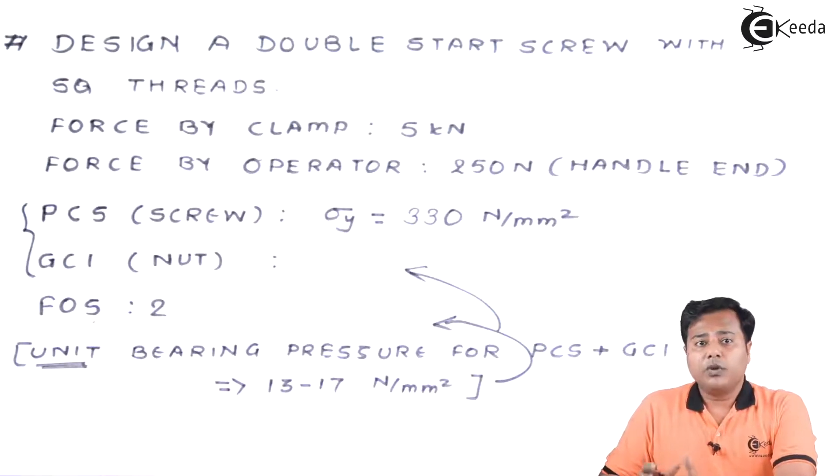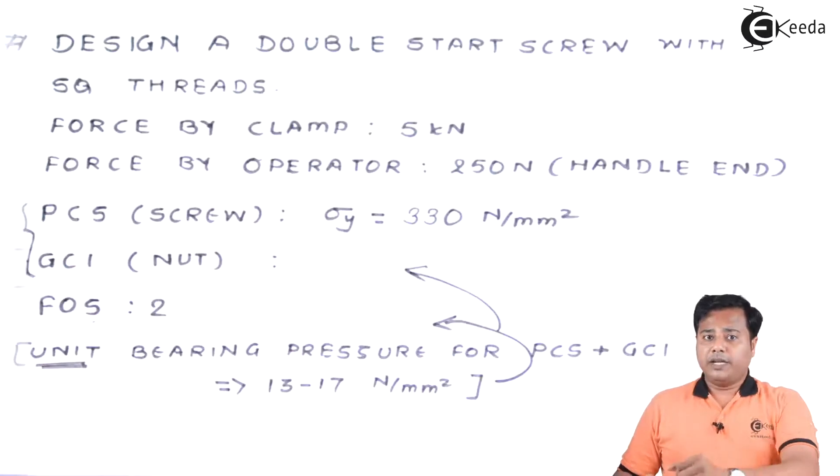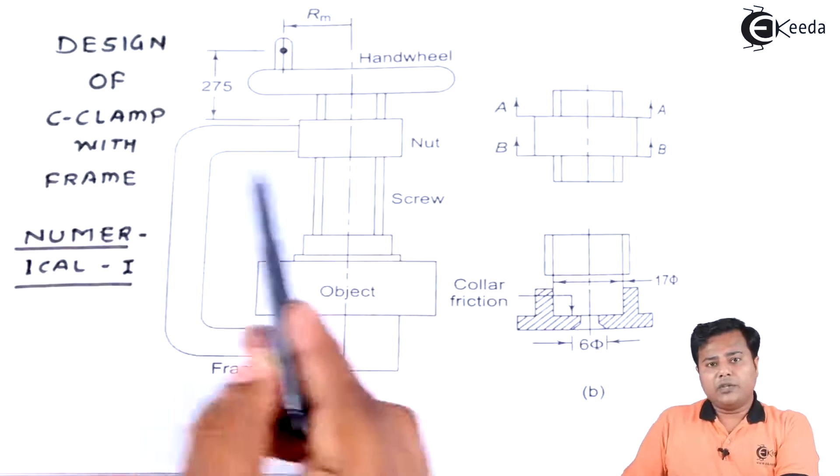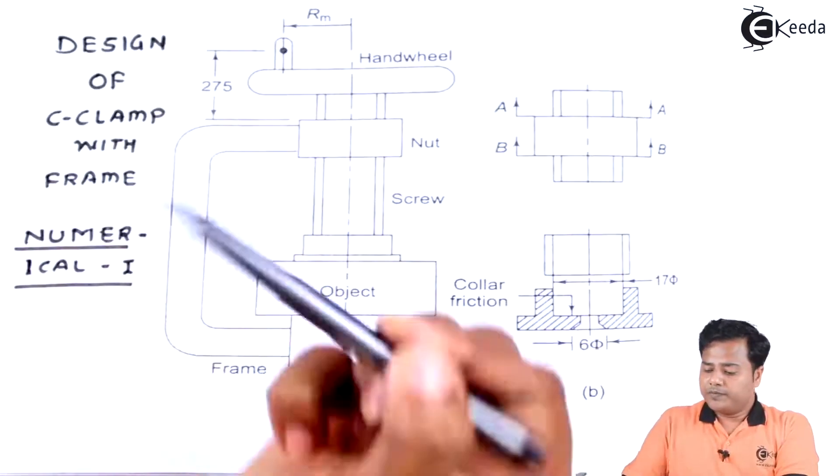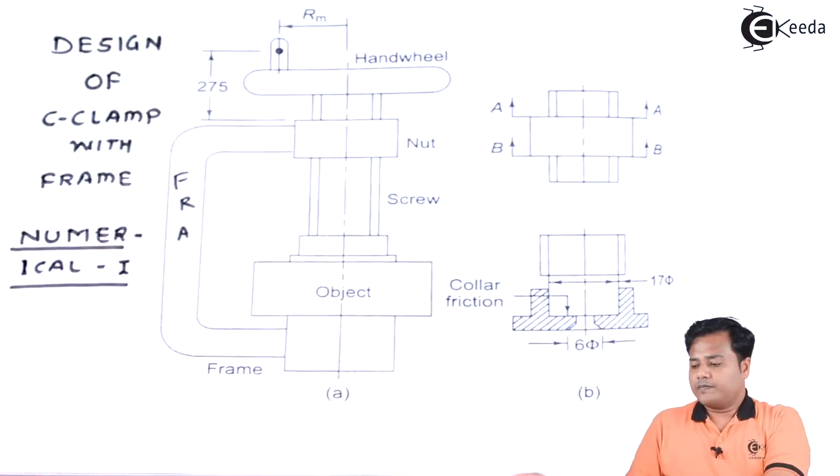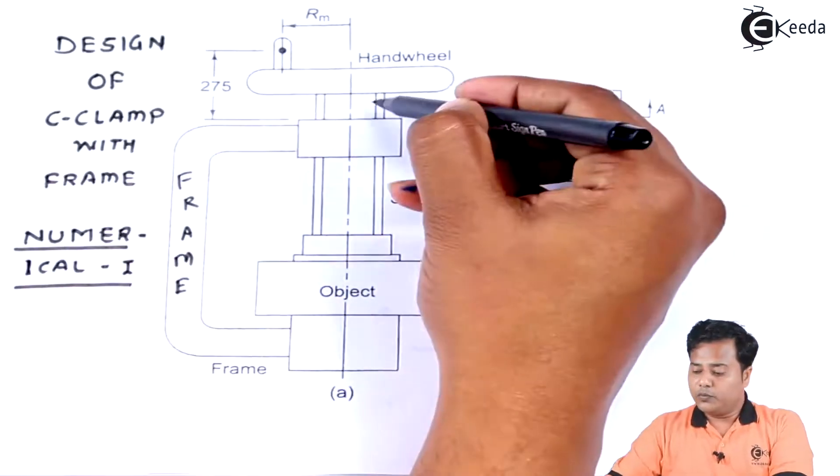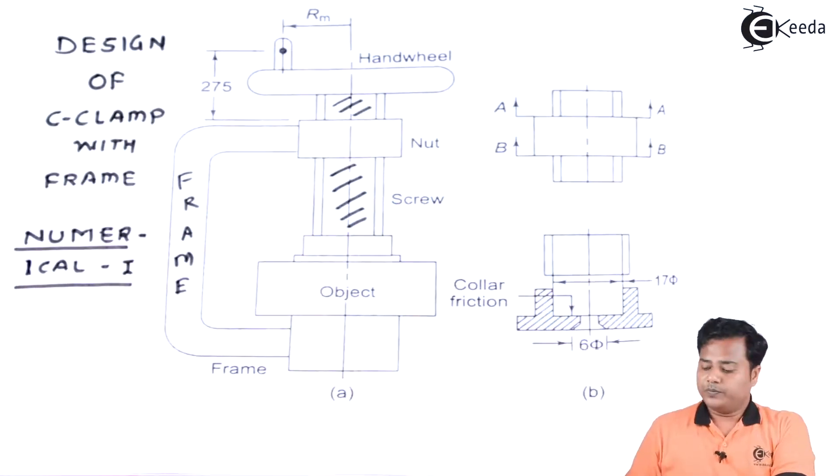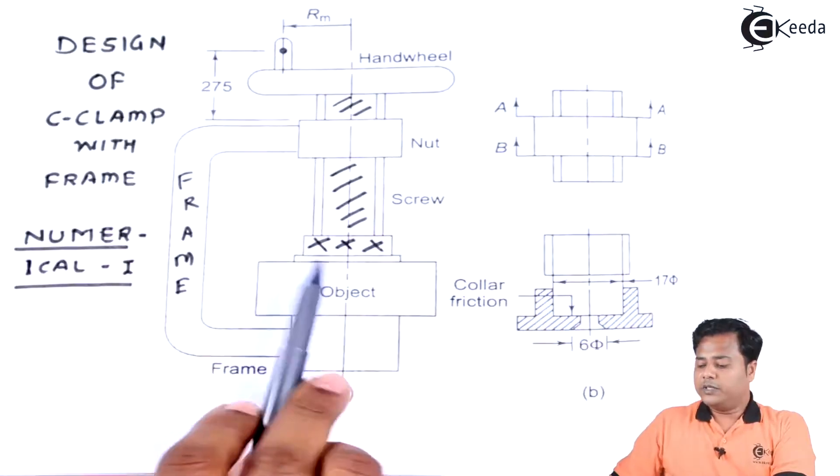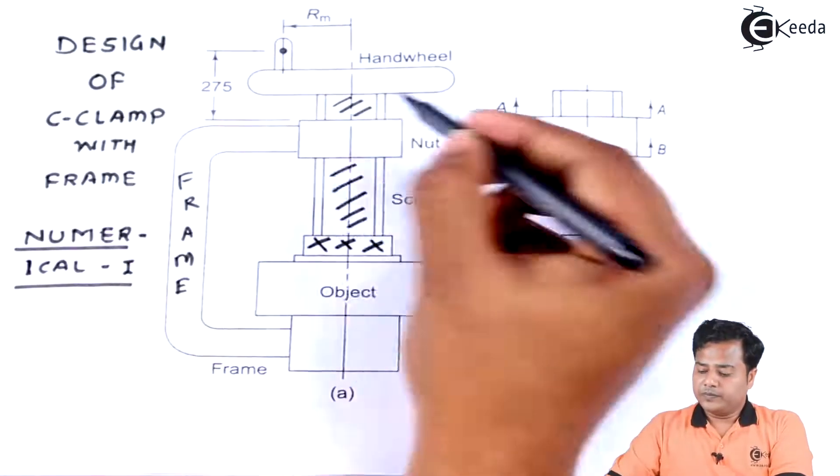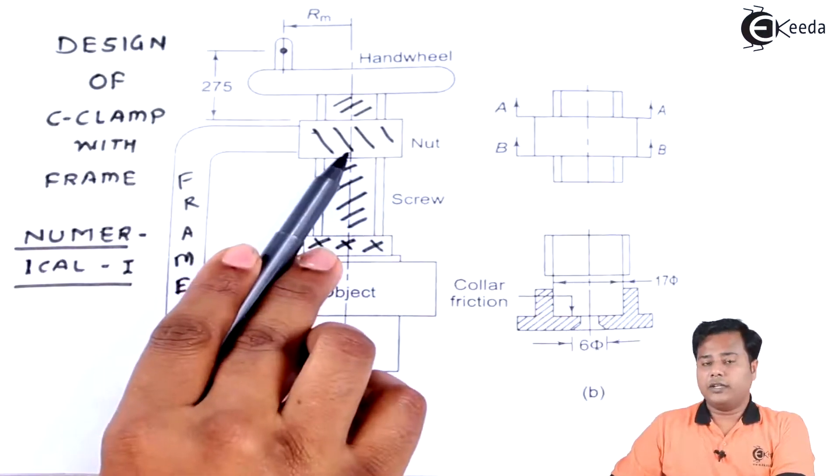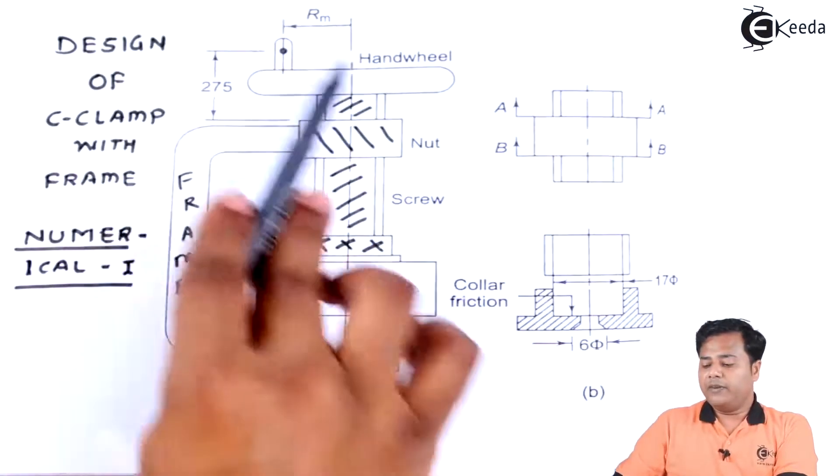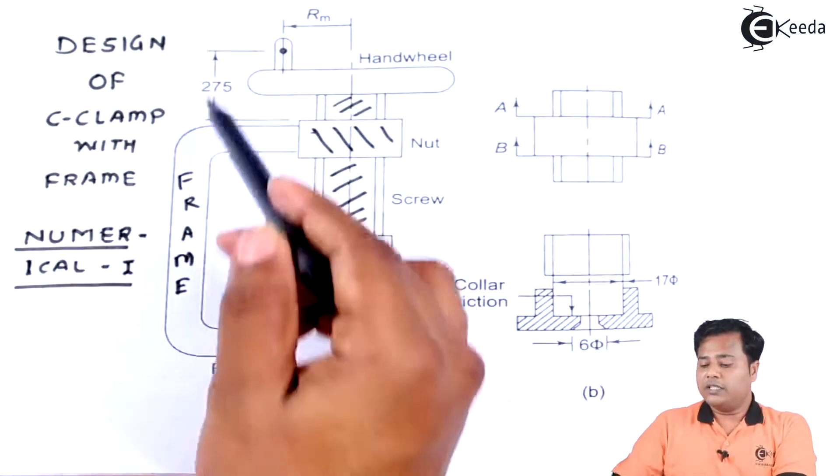With this data, let us look at the problem diagram. They have also provided us the problem diagram. Design of C clamp with frame, numerical one. This is how your diagram is all about, where this is the main frame. There comes this wall body, which is called your screw. There comes this section, this is called collar. And this section is your nut. There comes your hand wheel and the handle for it. That is how the bifurcation of the whole assembly is given to us with certain dimensions also.